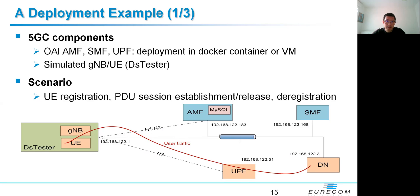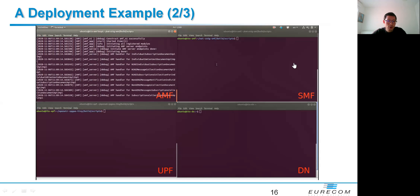Now let me give an example deployment of our 5G Core including AMF, SMF, and UPF, with a simulated gNodeB and UE from the DS tester. The 5G Core components can be deployed in a Docker container or in a virtual machine, while gNodeB and UE come from the DS tester. Based on a testing scenario defined in the DS tester, we can trigger different core flows. One typical example is that the UE first registers to the network, then establishes a PDU session and exchanges user traffic with the data network, then releases the PDU session and finally deregisters from the network. For the moment, we focus only on the functionality of 5G Core without any performance evaluation.